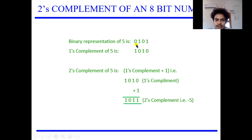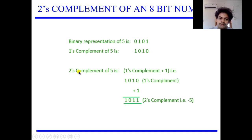So I hope you understood. Simplified: the 1's complement of 0101 is 1010. Adding 1 to 1010 gives me 1011, which is nothing but the 2's complement of that particular number. It's very simple, and the program is also going to be very simple.